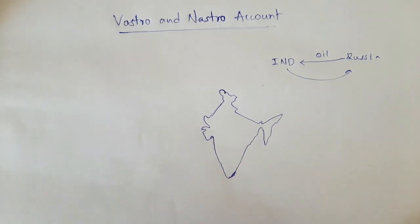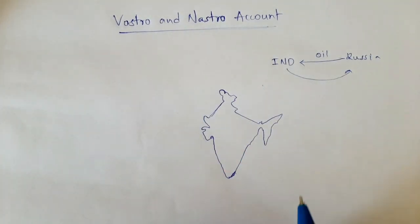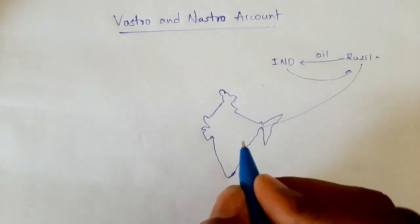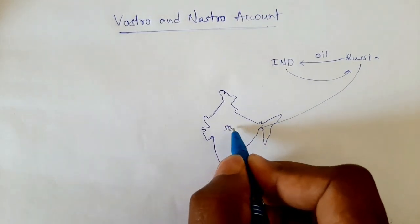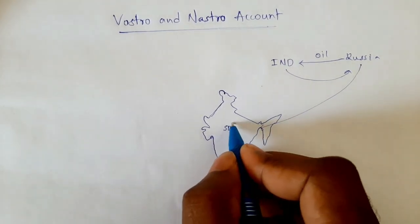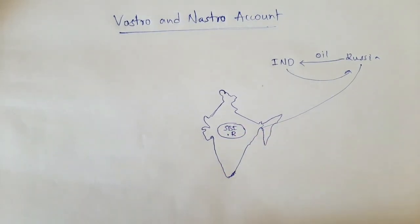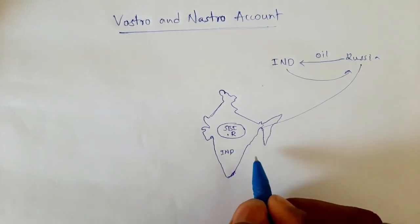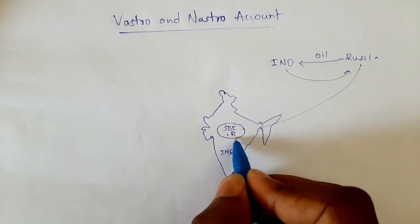It is never possible for Indian importers to go to Russia and pay there. So instead, Russia opens an account in an Indian bank — let's say SBI — to receive payment from Indian importers. In this way, a Russian account is opened in India, and Indian importers deposit their payments into this account, which is in SBI, which is in India.